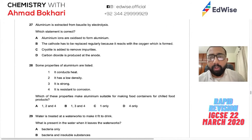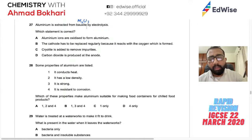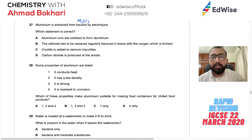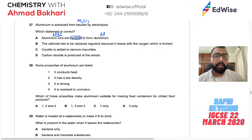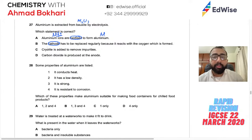Question 28: Aluminium is extracted from bauxite (Al2O3) by electrolysis; cryolite is added to lower the melting point. The statement 'aluminium ions are oxidized to form aluminium' is wrong — it's reduction (charge decreases). The anode (not cathode) must be replaced regularly because carbon anodes react with oxygen at high temperature to form CO2. Cryolite is not added to remove impurities — that's wrong. Carbon dioxide is produced at the anode. Answer: D, carbon dioxide is produced at the anode.